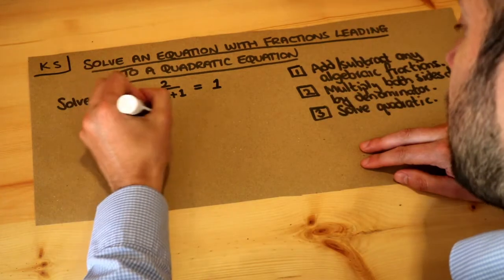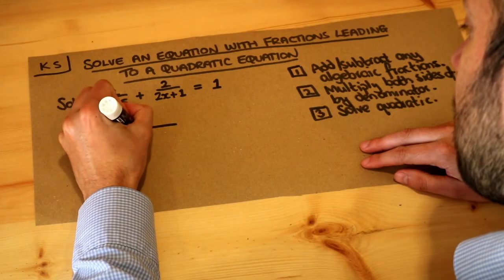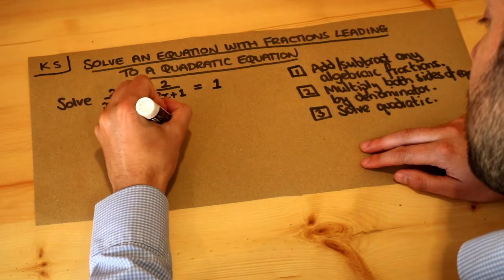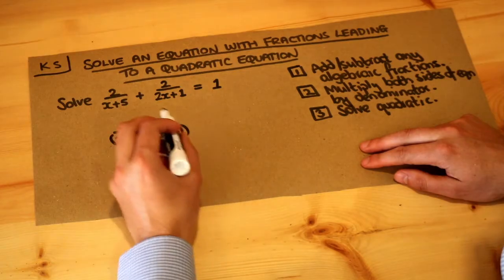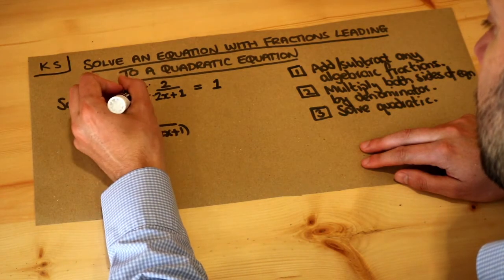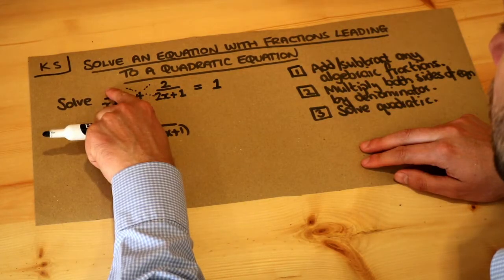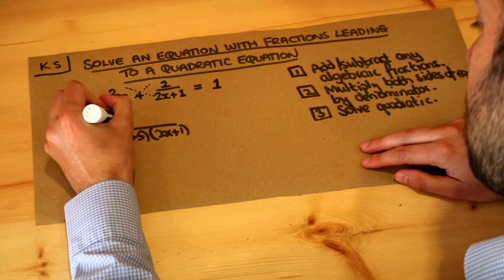We saw how to previously do this. We multiply the denominators, so (x + 5) times (2x + 1). We'll expand this out in a second. And we cross multiply the numerators—if you don't know how to do this, do look at my previous videos. We cross multiply the numerators in this cross-type fashion: 2 multiplied by (2x + 1).